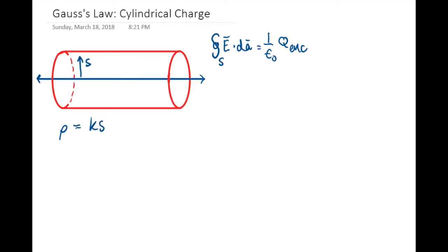We're going to find the electric field inside the cylinder by drawing a Gaussian surface that is a smaller cylinder inside the cylinder. Our Gaussian surface has length l.